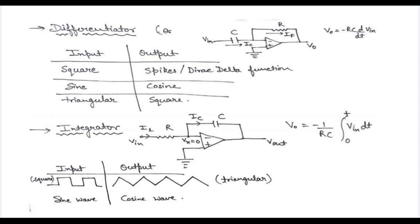For the integrator circuit, if the input is a square wave, the output will be a triangular wave. If the input is a sine wave, the output will be a cosine wave as well.